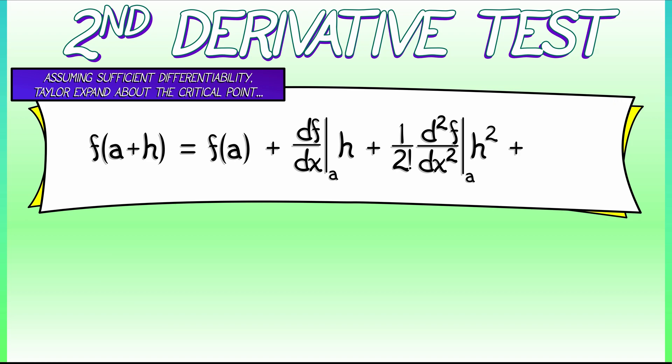Let's pop that into a big O of h cubed trash can. Now, let's think. We have a critical point. That means the first derivative vanishes. That term is gone. If we ignore all of the higher order terms, all the terms that are cubic and above, then what do we have?